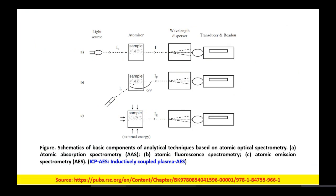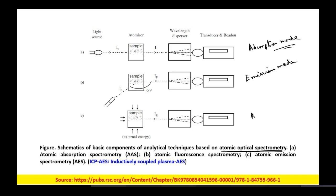Coming to the next topic: schematics of basic components of analytical techniques based on atomic optical spectrophotometry. Atomic optical spectrophotometry can be carried out in three ways: first, absorption mode; second, emission mode; and third, atomic emission spectroscopy — AES in short.